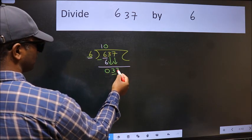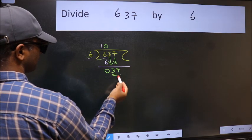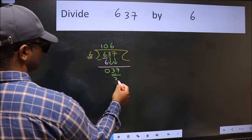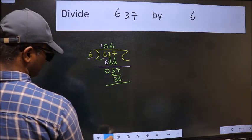Now we have 37. The number closest to 37 in the 6 table is 6 times 6, which equals 36. Subtract and we get 1.